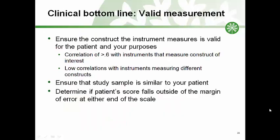Summarizing, here's the bottom line for validity. First, ensure that the instrument measures what it claims to measure by examining validity coefficients between the instrument and similar or different instruments. Second, ensure that the study sample characteristics are similar to the patients in your setting. And third, ensure that your patient's score lies within the valid scale range of the instrument — that is, outside of the margin of error for each end of the scale.